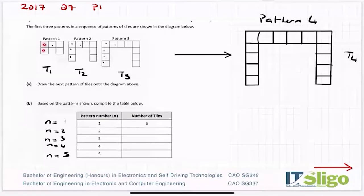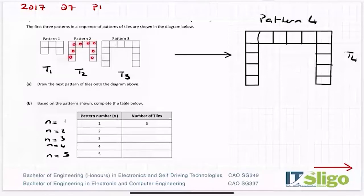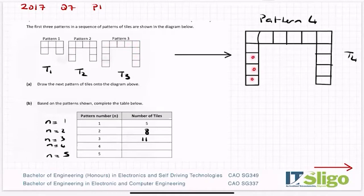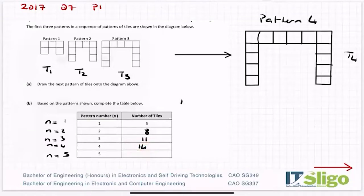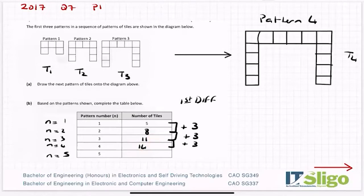So there are 5 tiles in the first pattern, 8 in the next one, 11 in the next one. To double-check my answer I'm going to have a look at the first difference. To get from 5 to 8 was plus 3, to get from 8 to 11 was plus 3, so I know it's going to be plus 3. So pattern 4 has 14 tiles and the next one is going to have 17 tiles.